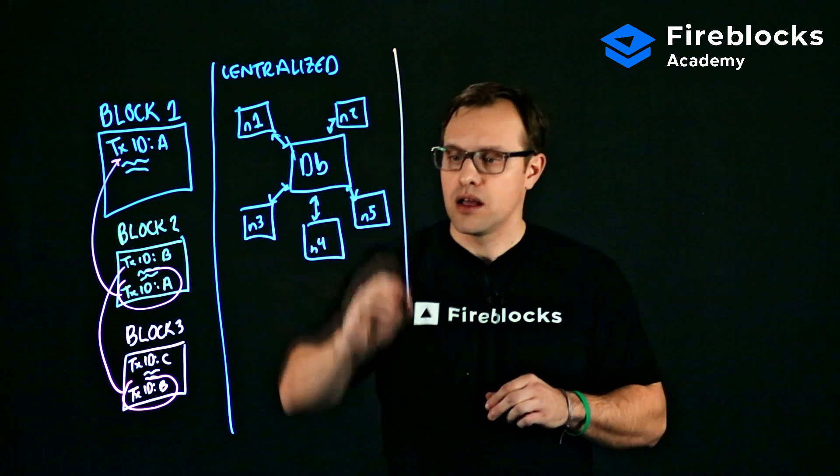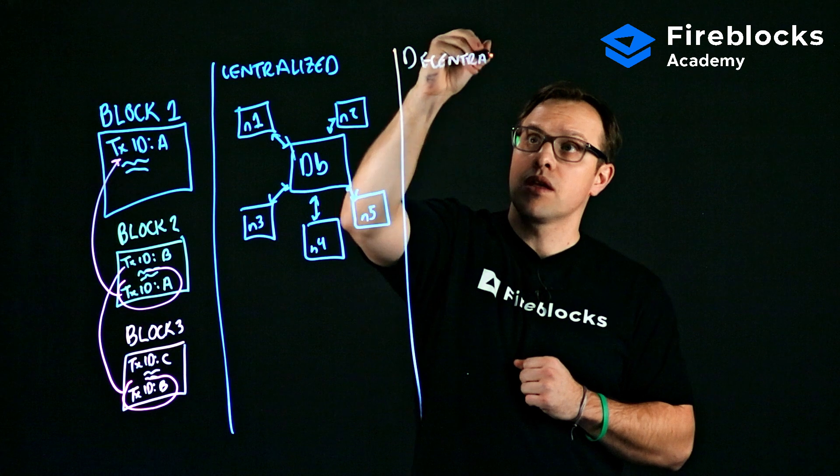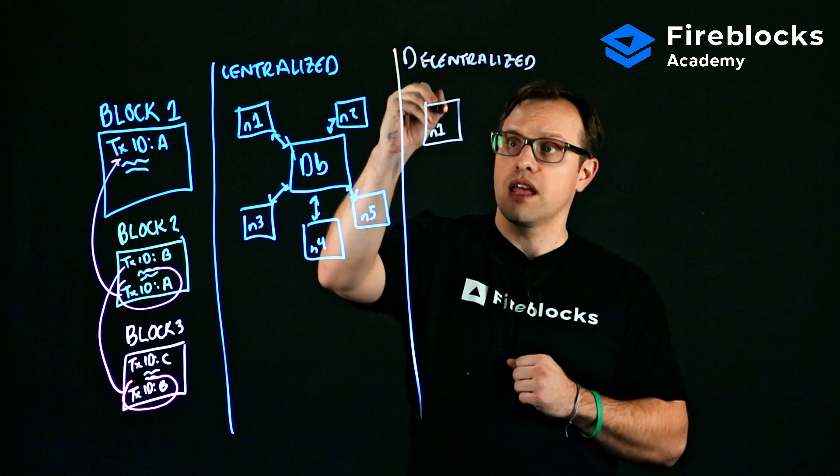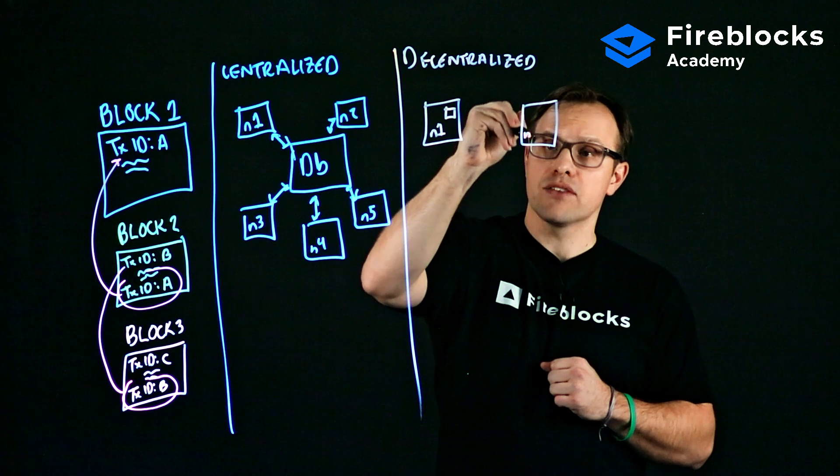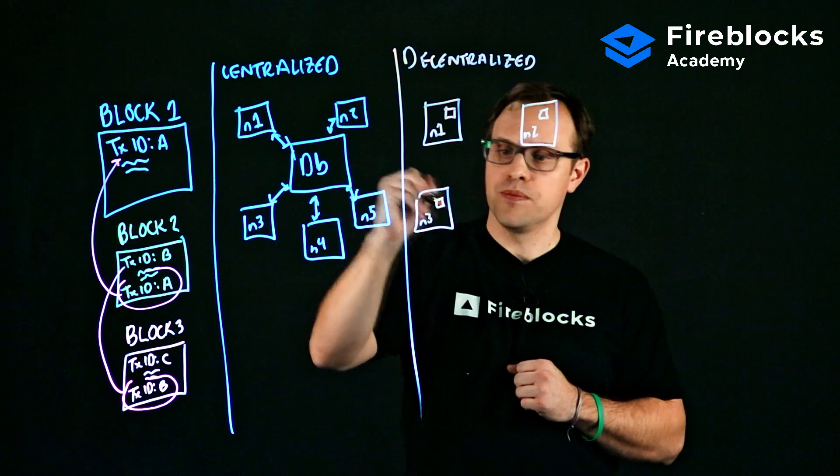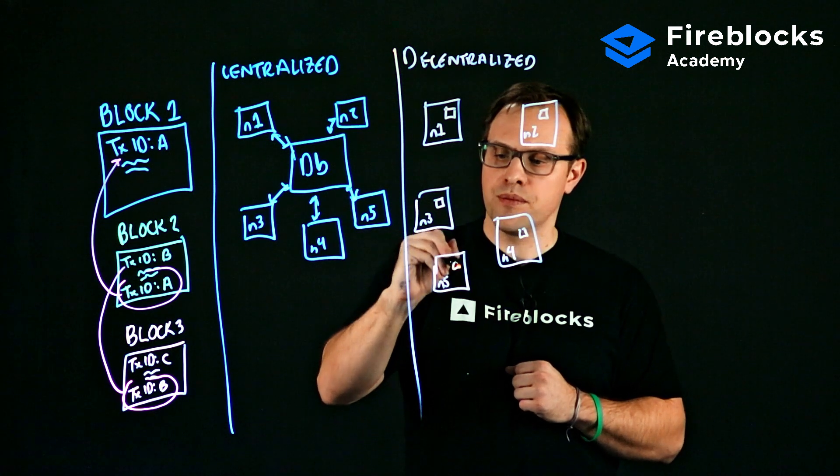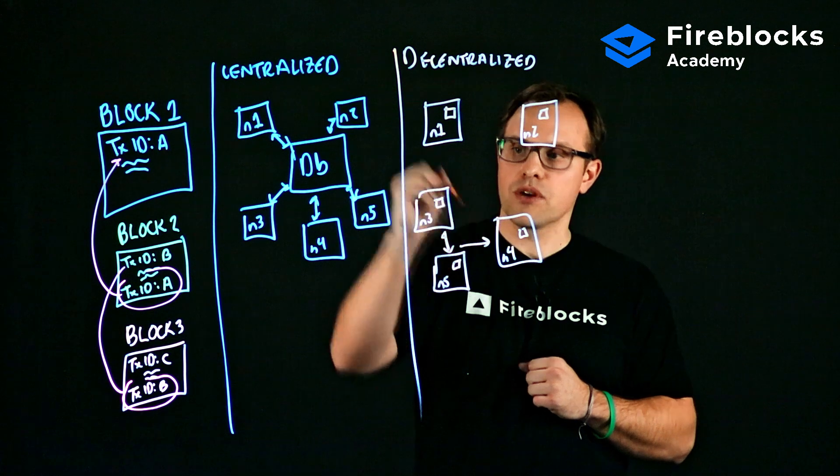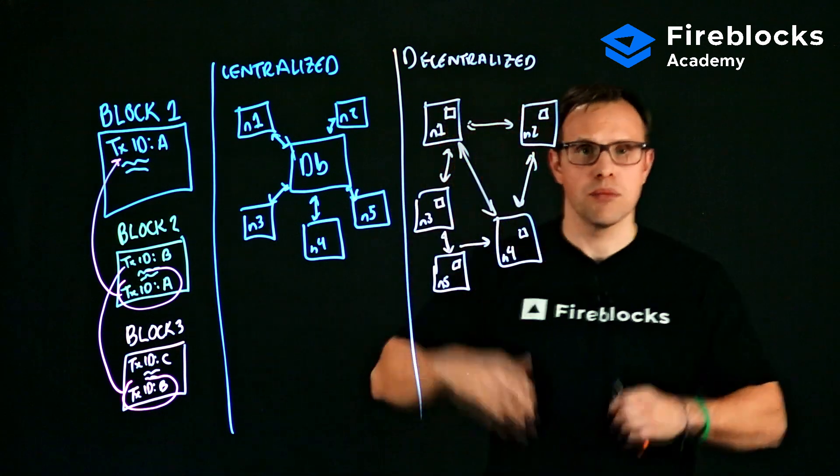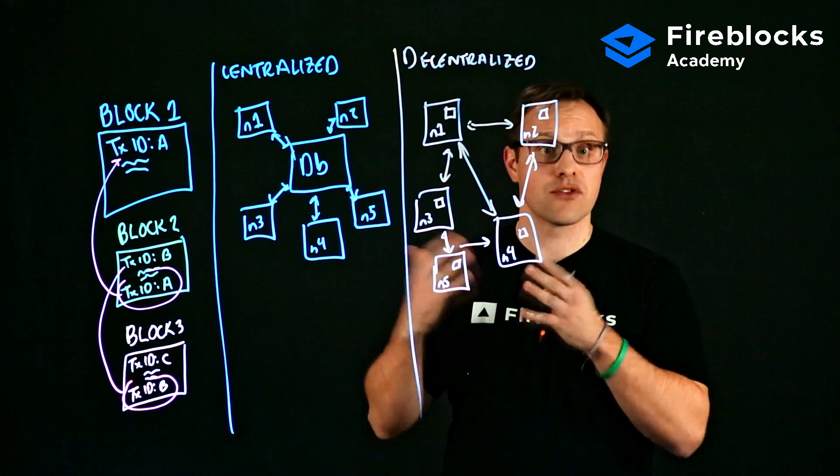Now in a decentralized blockchain example or blockchain database example, we have the same access nodes or users, except each one of these has its own copy of the database as well. These are all connected in some way, shape, or form because they have to communicate with each other about new transactions. But again, the key thing to notice here is that there is no central repository of information. Each node has its own copy of the actual database or ledger of transactions.